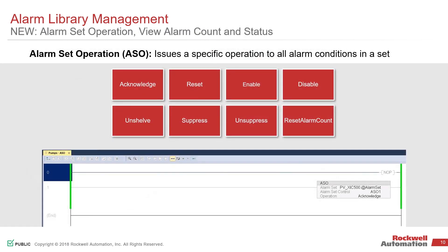The bulk actions that we can take on alarm sets are handled with the new ASO instruction. This allows us to initiate bulk actions on a set of alarms — things like enabling or disabling groups of alarms, acknowledging a whole group of alarms at once, resetting, and so on. That's done with this new ASO instruction.